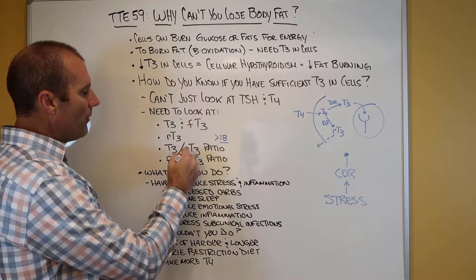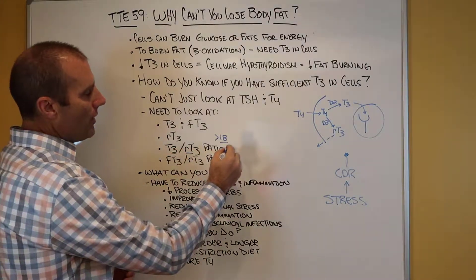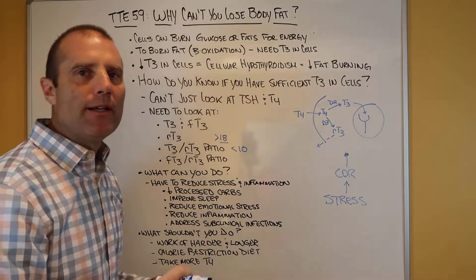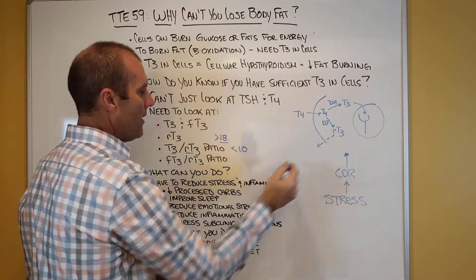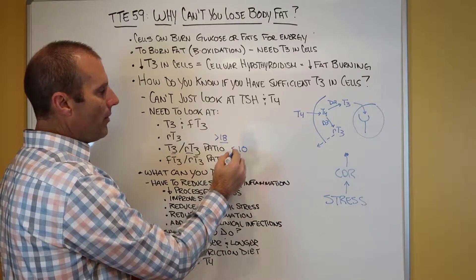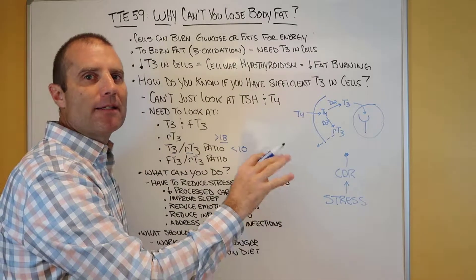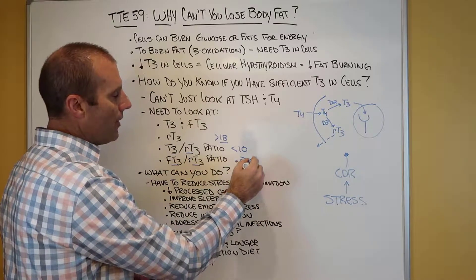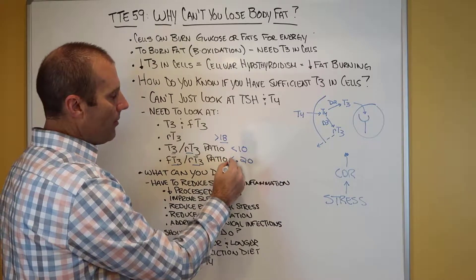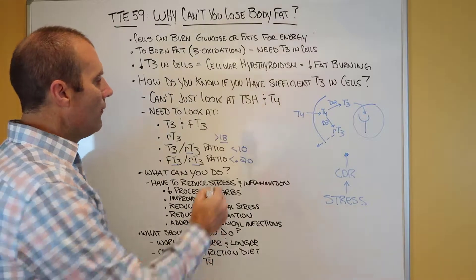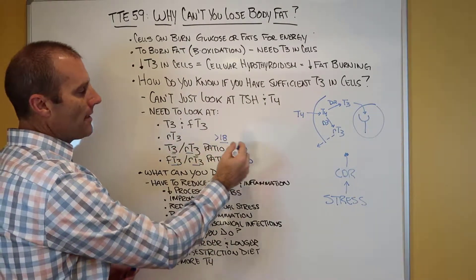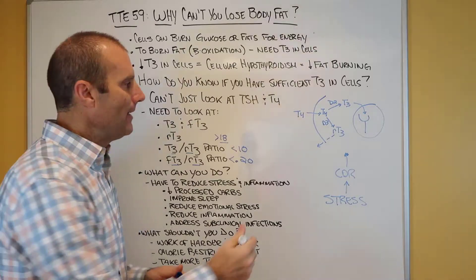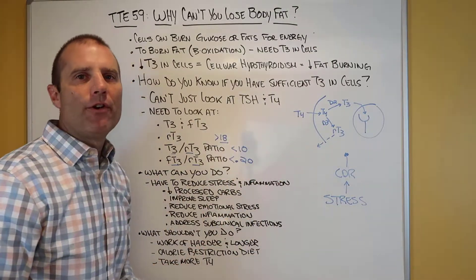The other thing we want to look at is the T3 to reverse T3 ratio. If this ratio is less than 10, that means you're making relatively more reverse T3 than T3, and cellular hypothyroidism is occurring. In health, that number is greater than 10. You can also look at the free T3 to reverse T3 ratio — in health, this number is greater than 0.2, but in cellular hypothyroidism it's going to be less than 0.2. So if you have reverse T3 greater than 18, T3/rT3 less than 10, and free T3/rT3 less than 0.2, there's a good indication that you have cellular hypothyroidism, and until this gets addressed and fixed, you probably aren't going to burn fat efficiently.